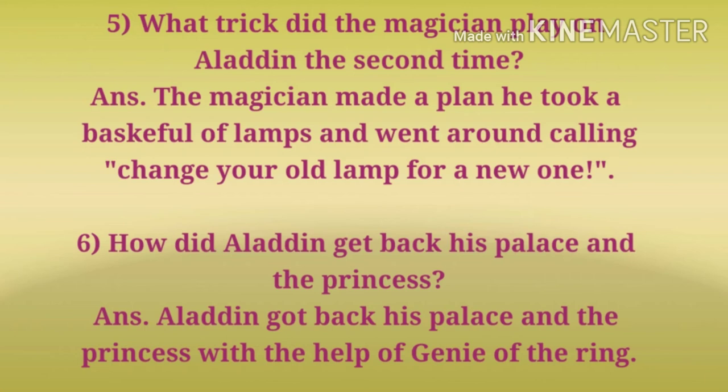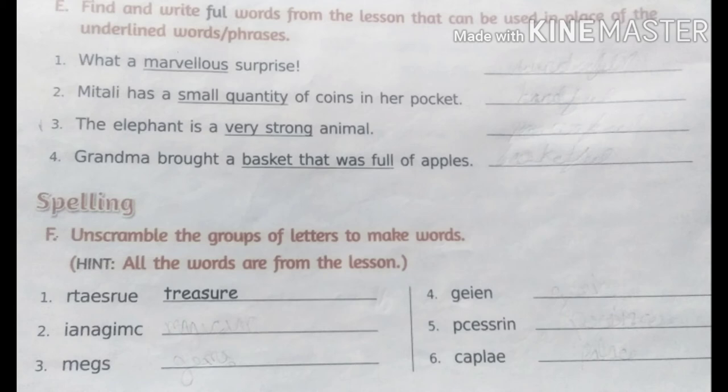The next question is how did Aladdin get back his palace and the princess? The answer is Aladdin got back his palace and the princess with the help of the genie of the ring. The next exercise is find and write full words from the lesson that can be used in the place of underlined words and phrases.